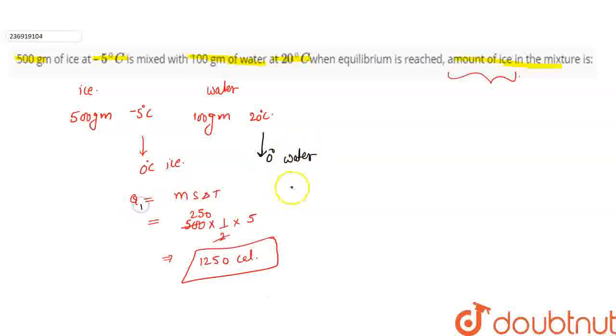This is Q1, this is Q2. How much will it release if it becomes 0 degree water? That will also be m, which is 100 grams, S of water is 1, into delta T. Delta T will be 20 degrees to 0 degrees, which is 20.